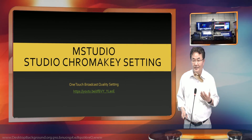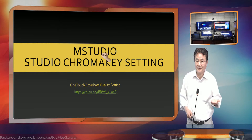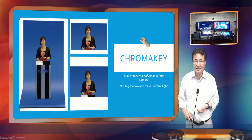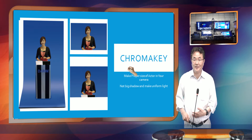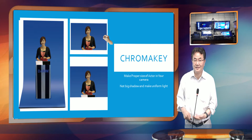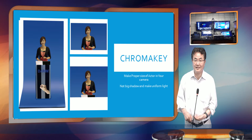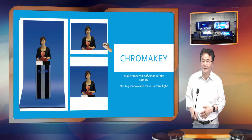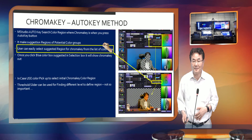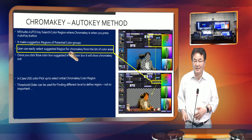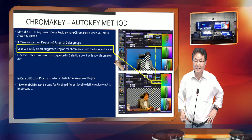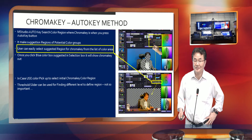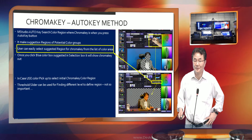The next step after you have a studio is to make a chroma key setting. Chroma setting — you have to make a camera to select your part. You don't have to select every part. You just make yourself with a background to show on your presentation. Chroma key means we do chroma key takeout. It looks a little complicated, but you don't have to worry because you just use auto key and everything will work.